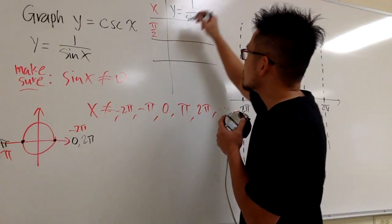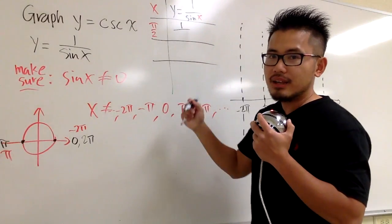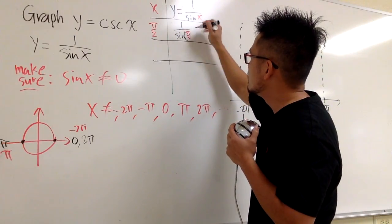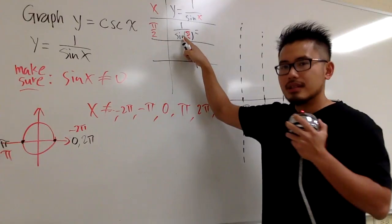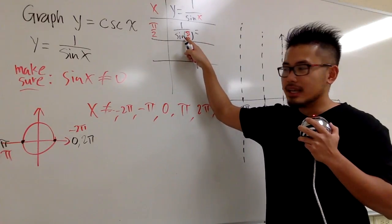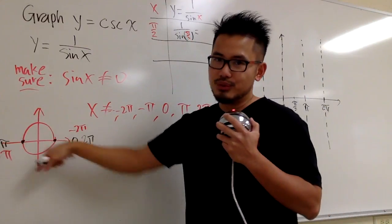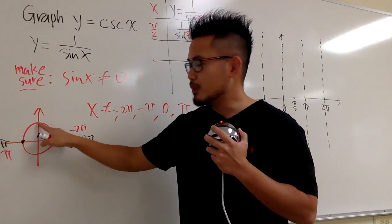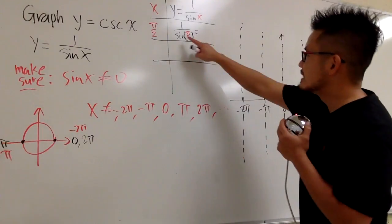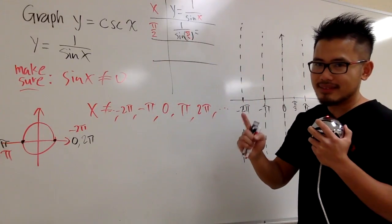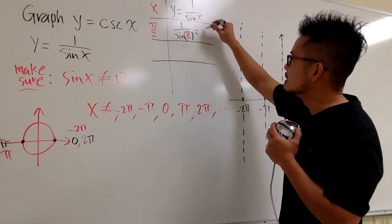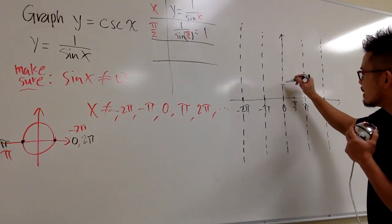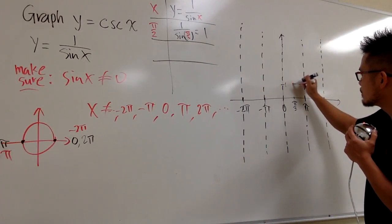So let's plug in pi over 2 for x. That means I have to work out 1 over sine of pi over 2. And what's sine of pi over 2? Sine of pi over 2, you can look at the unit circle. Pi over 2 is right here, and the y value here is 1. So sine of pi over 2 is 1. 1 over 1 is 1. So we have pi over 2, comma 1. And let me just put points right here.